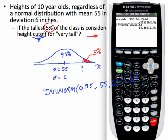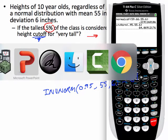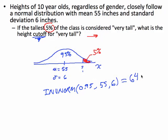The calculator confirms 64.9 inches. Remember that's in inches — that's not a probability. So the value on the axis was 64.9 inches, meaning 5% of 10-year-olds are taller than that cutoff.